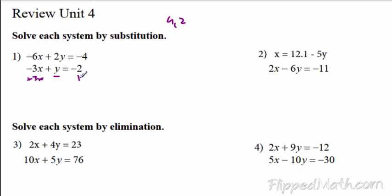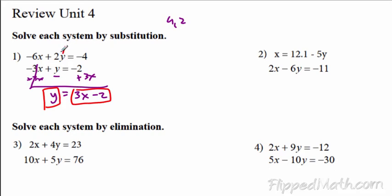So if we add 3x to each side, they cancel and you get y equals 3x minus 2. Now you take this y — it's equal to 3x minus 2 — and we're going to plug it into the first equation for y. So we have negative 6x plus 2 times (3x minus 2). Always use parentheses when you substitute an expression in like that, and it equals negative 4.